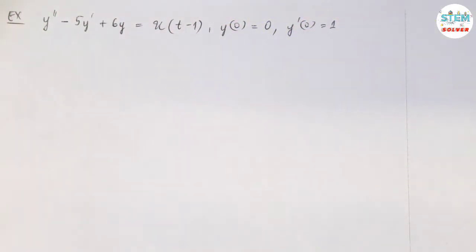Using the Laplace transform to solve the initial value problem: y double prime minus 5y prime plus 6y equals u of t minus 1, and we are given y of 0 equals 0, y prime of 0 equals 1.